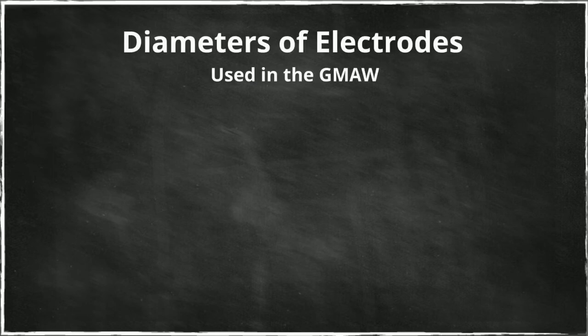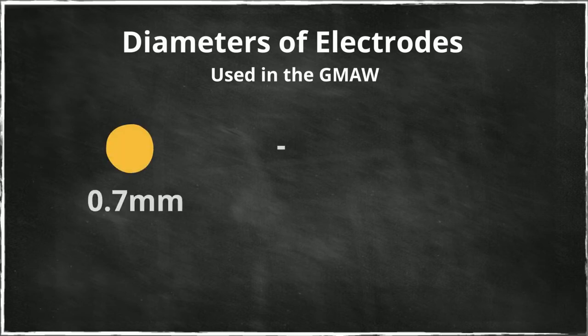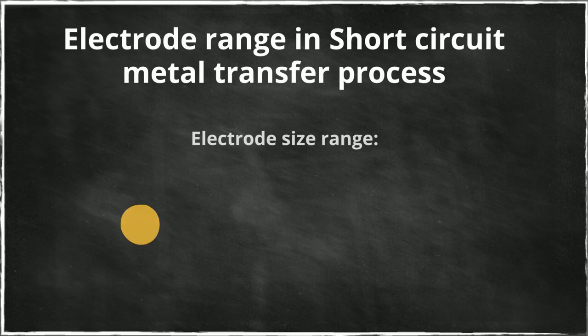Depending on the process, variation, and base metal being welded, the diameters of electrodes used in the GMAW typically range from 0.7 to 0.4 millimeters. The smallest electrodes, generally up to 1.14 millimeters, 0.045, are associated with short-circuit metal transfer process, which is the process we've used in this demonstration here.